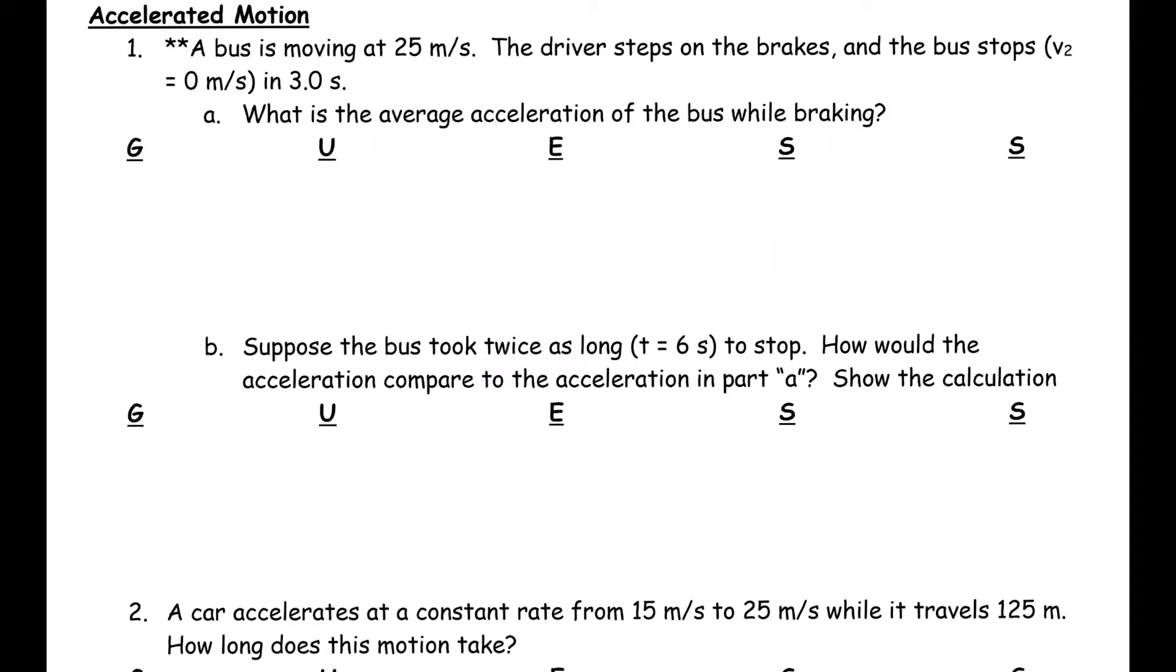For our first problem, we have a bus moving at 25 meters per second. The driver steps on the brakes, and the bus stops, which means that V₂ equals 0 meters per second. It stops in three seconds. Our question then becomes, what is the average acceleration of the bus while braking? So, what we're going to do is first identify all of our given values. If it's a number, it's a given value.